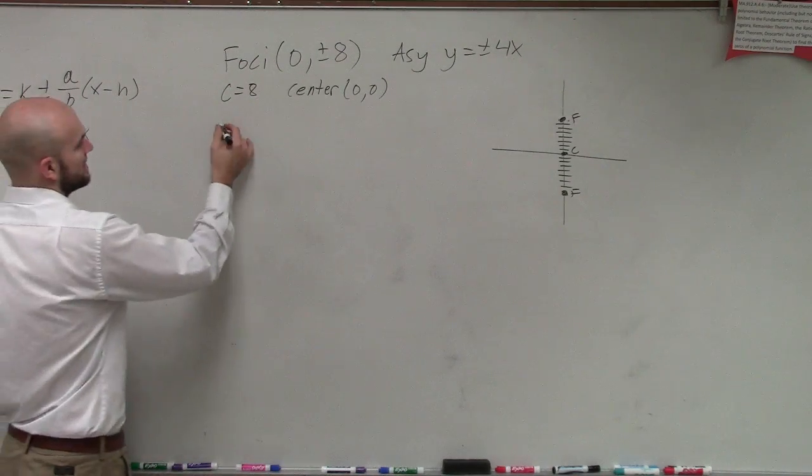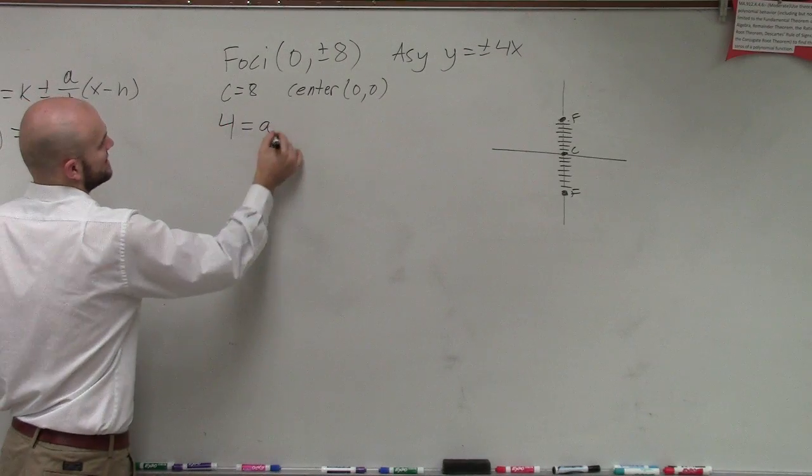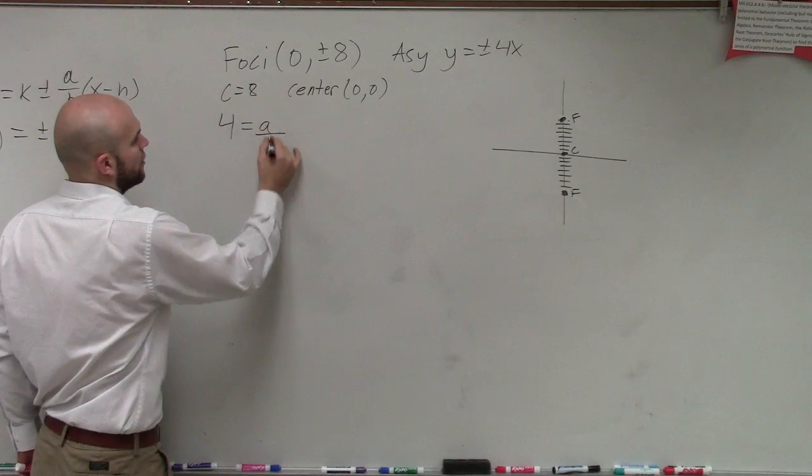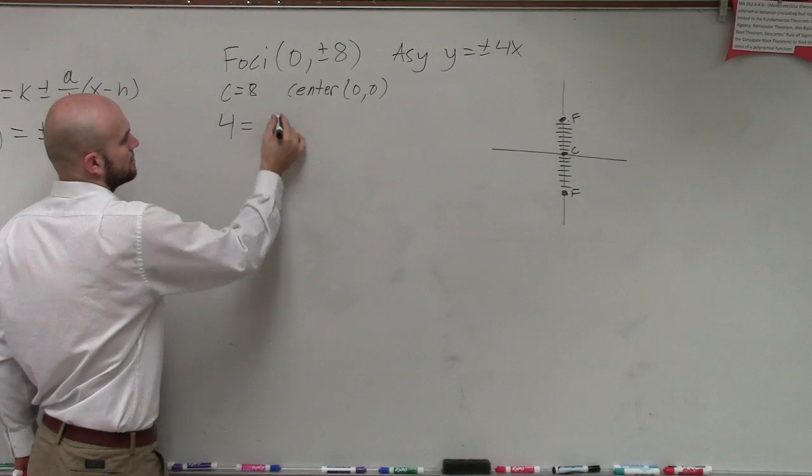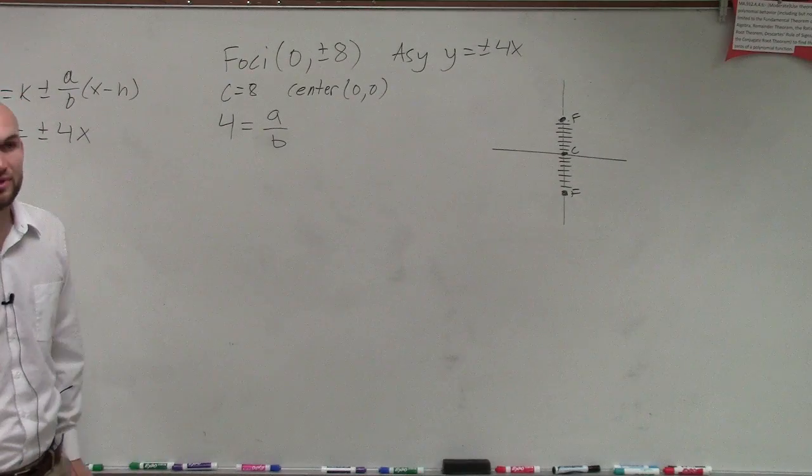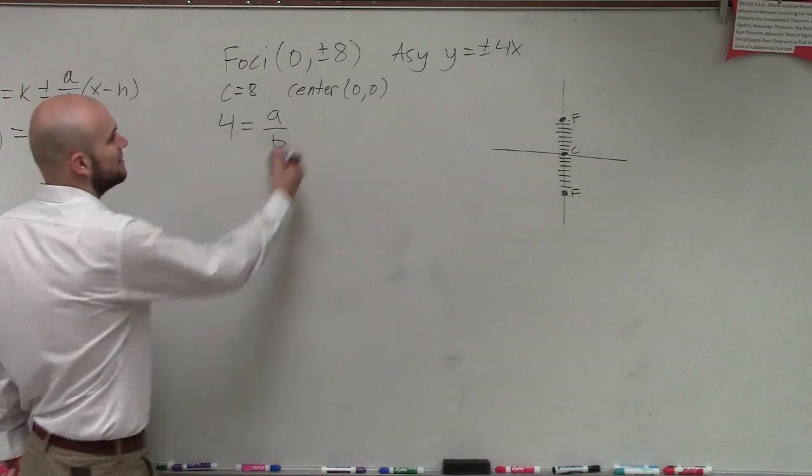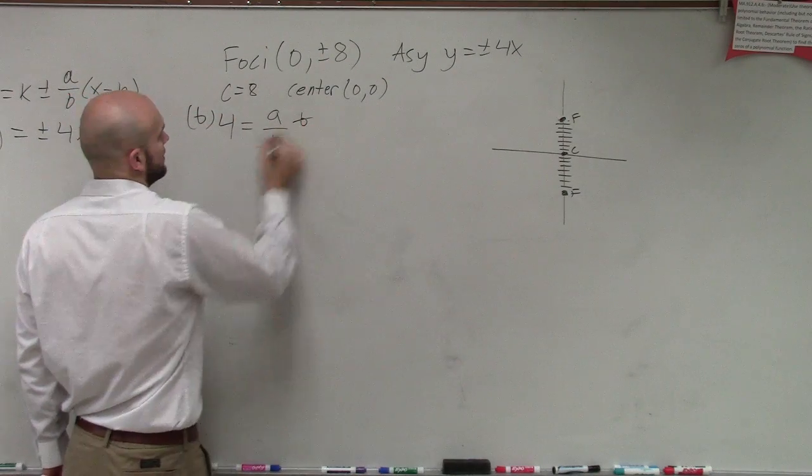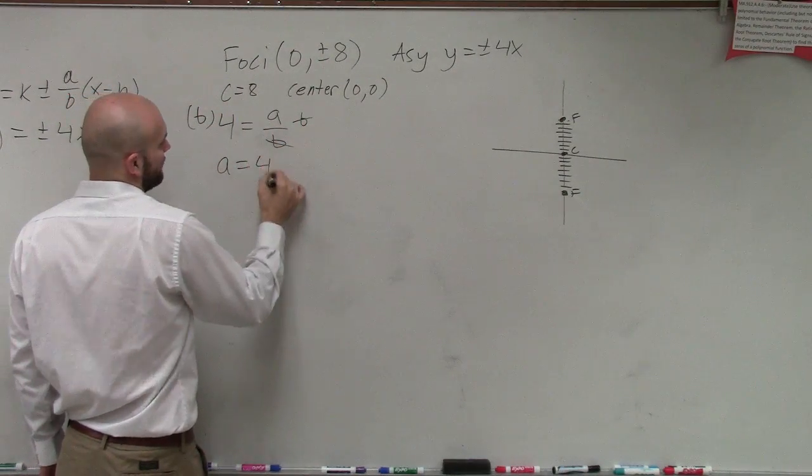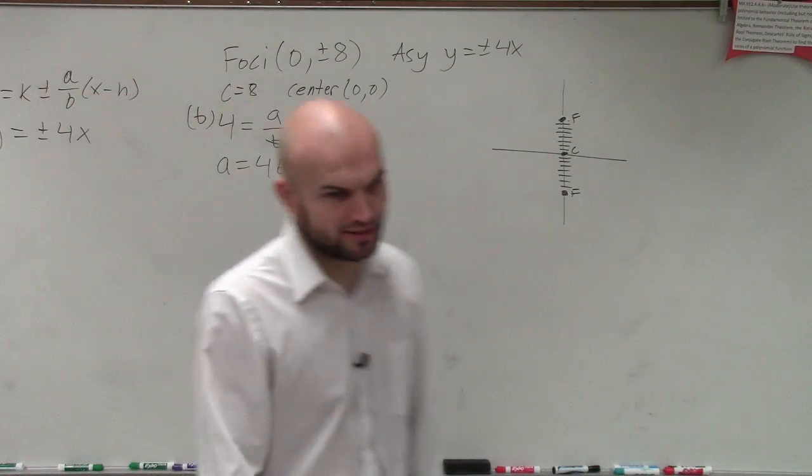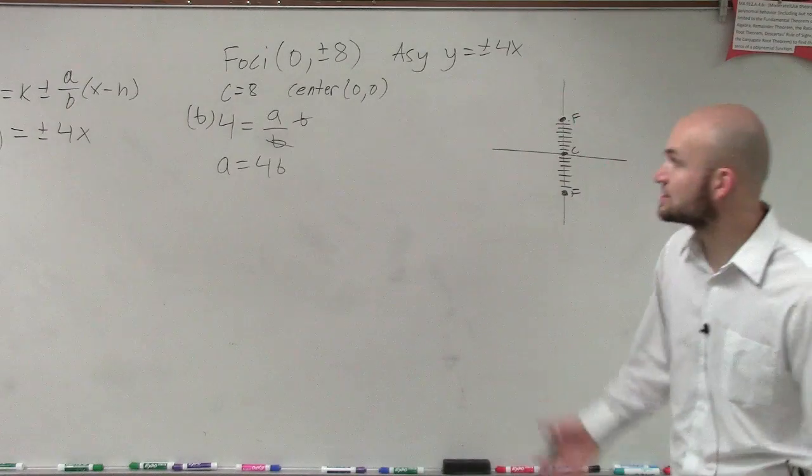A over b. So we could say 4 equals a over b, right? That's not really going to help us because we want to figure out what a and b are. But I can multiply by b on both sides, and I can say a equals 4b. Not an exact value, but something we can get into. Now, why would that become important?